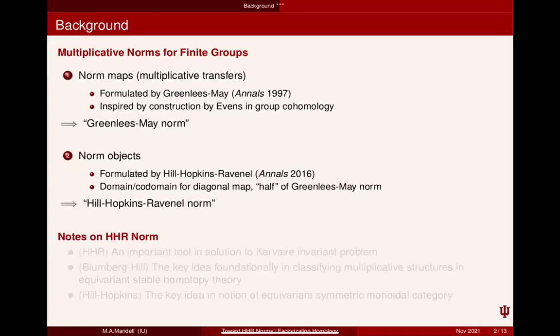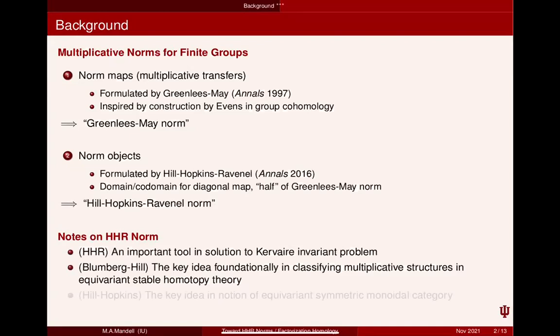Let me start with some remarks on the HHR norm. There's the paper by Hill-Hopkins-Ravenel where they solve the Kervaire invariant problem, and this was an important tool in that paper. Even beyond that, these norms are important foundationally. Blumberg-Hill in a series of papers showed the key idea foundationally in classifying multiplicative structures in equivariant stable homotopy theory. A paper of Hill and Hopkins shows that if you want a genuine equivariant notion of symmetric monoidal category, the HHR norm plays a key role in that.